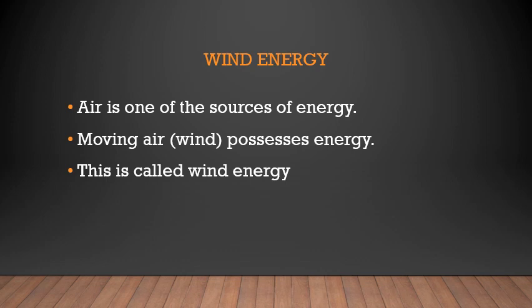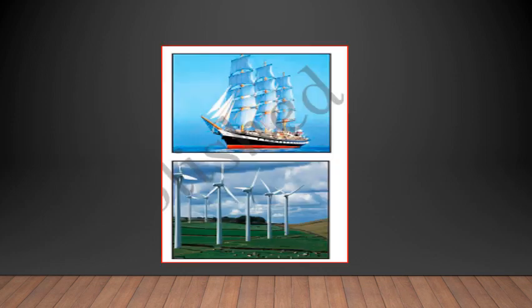Next is wind energy. Air is a source of energy — moving air possesses energy, and this is called wind energy. In ancient times, people used wind to sail boats and ships on oceans. Windmills rotate due to the fast movement of wind, and turbines rotate due to wind energy, producing electricity that we can use in different activities.